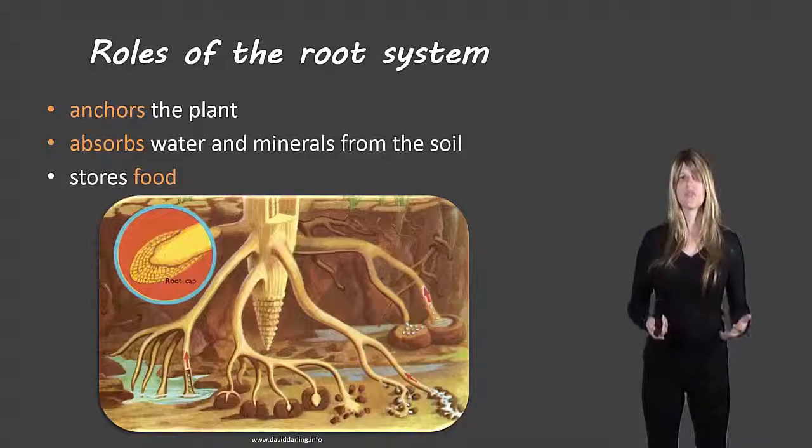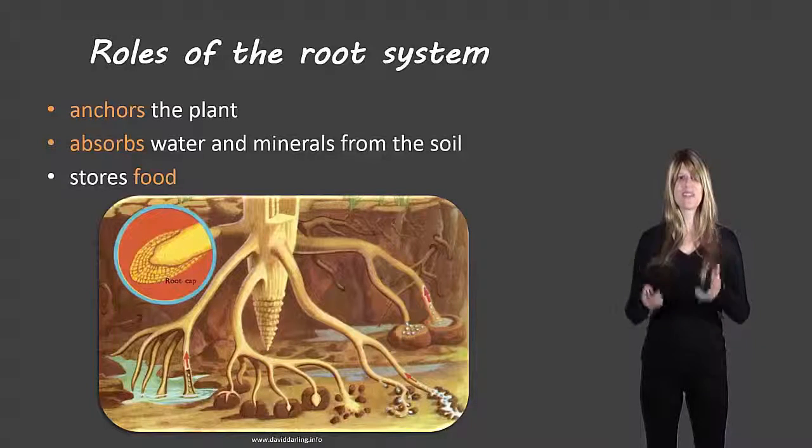And then finally it stores food. So we're familiar with some types of roots like carrots. That orange part that we eat, that's actually the root. So that's a type of food. So those plants store food in the roots.